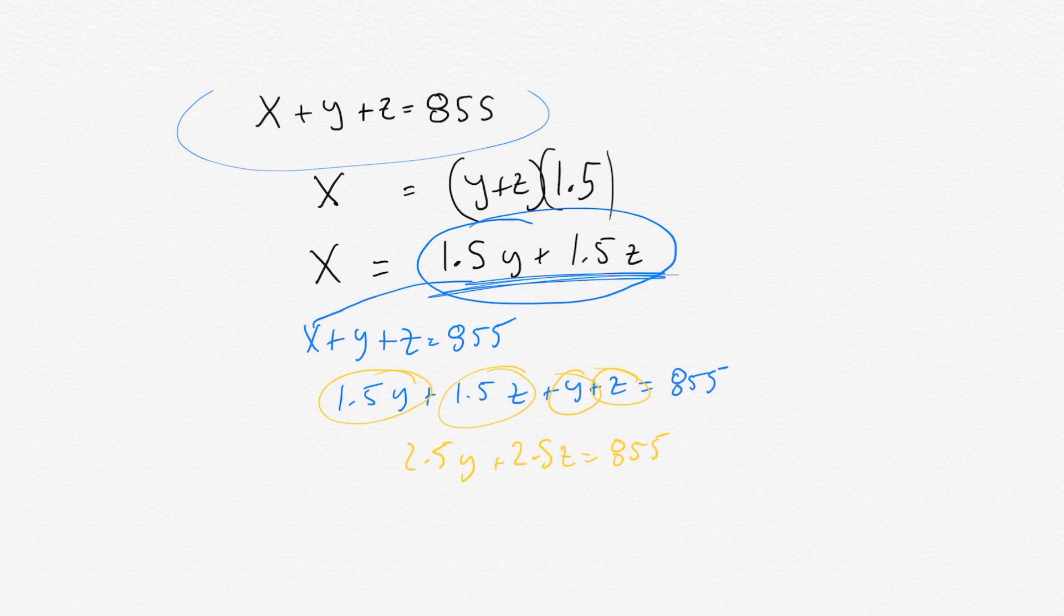And at that point, you have 2.5Y plus 2.5Z equals 855. And then you can divide, you could factor out 2.5 from each side.